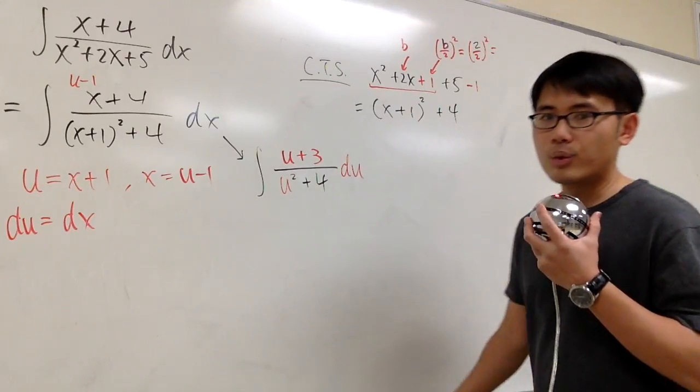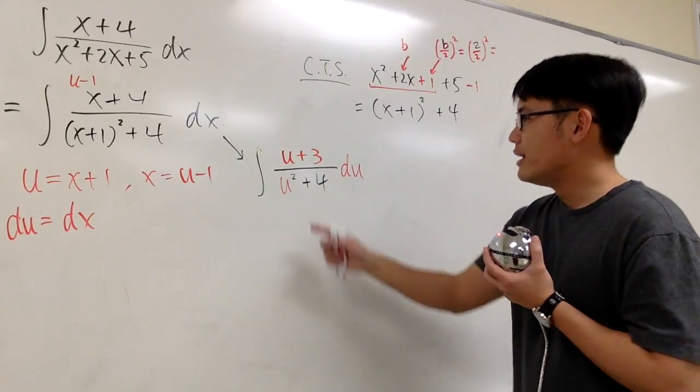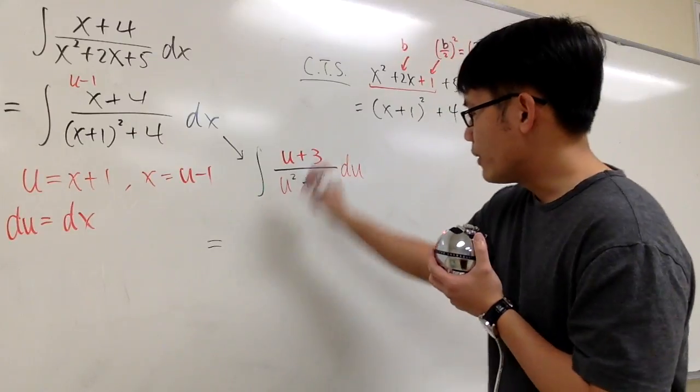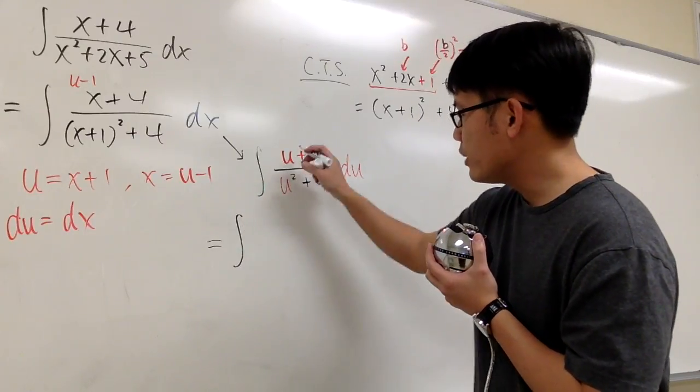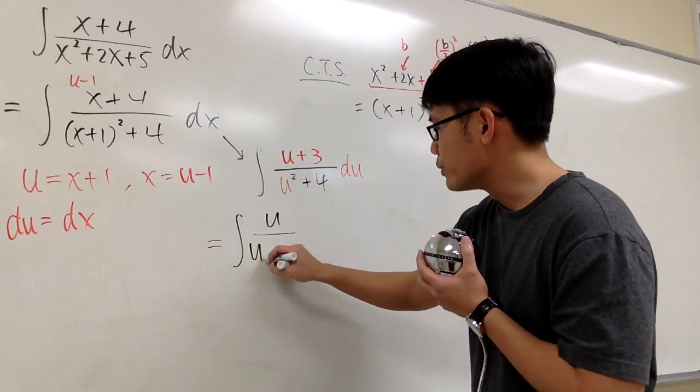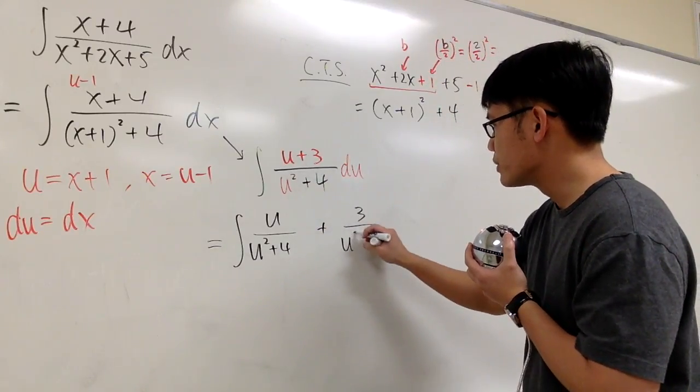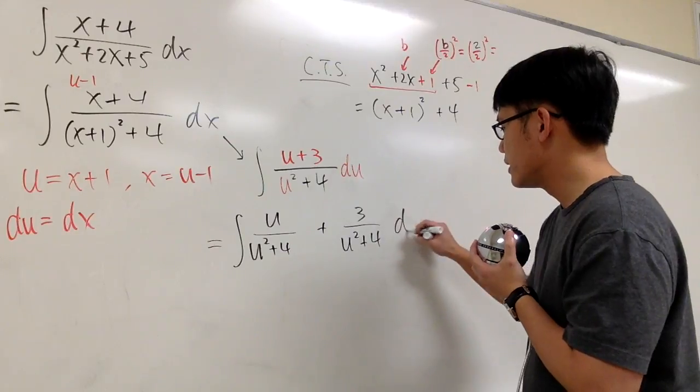And because of two things on the top, let's split a fraction to see what we can do with that. So this is the same as integrating u over u squared plus 4 plus 3 over u squared plus 4 du.